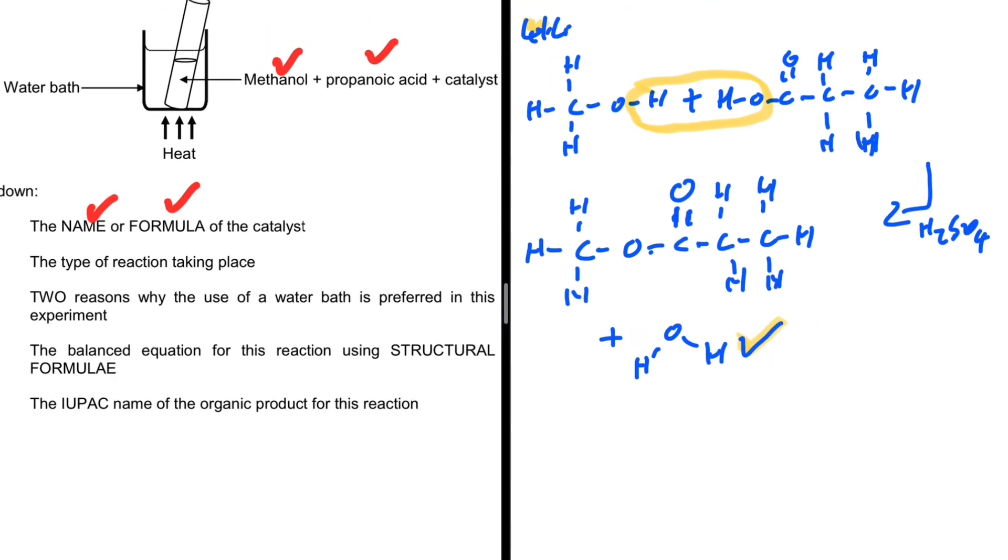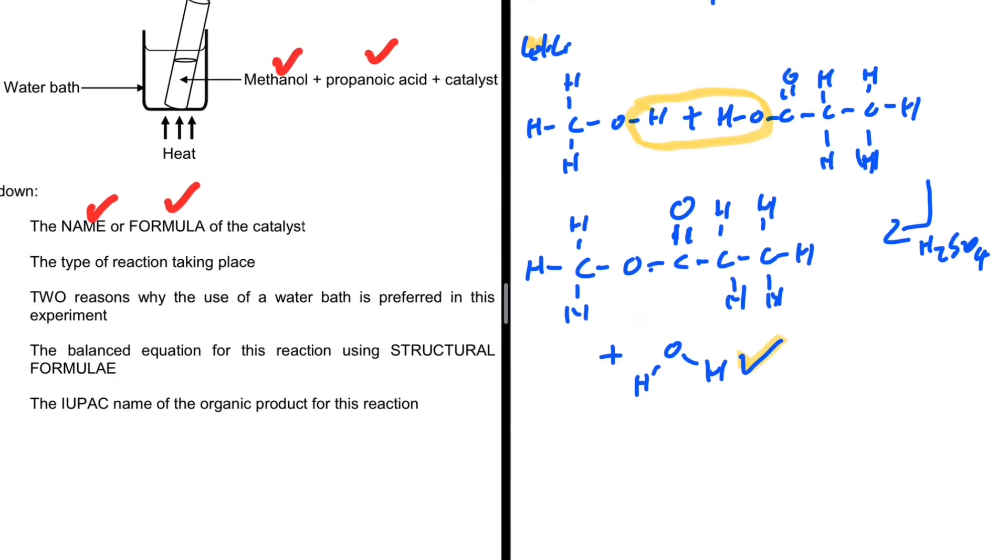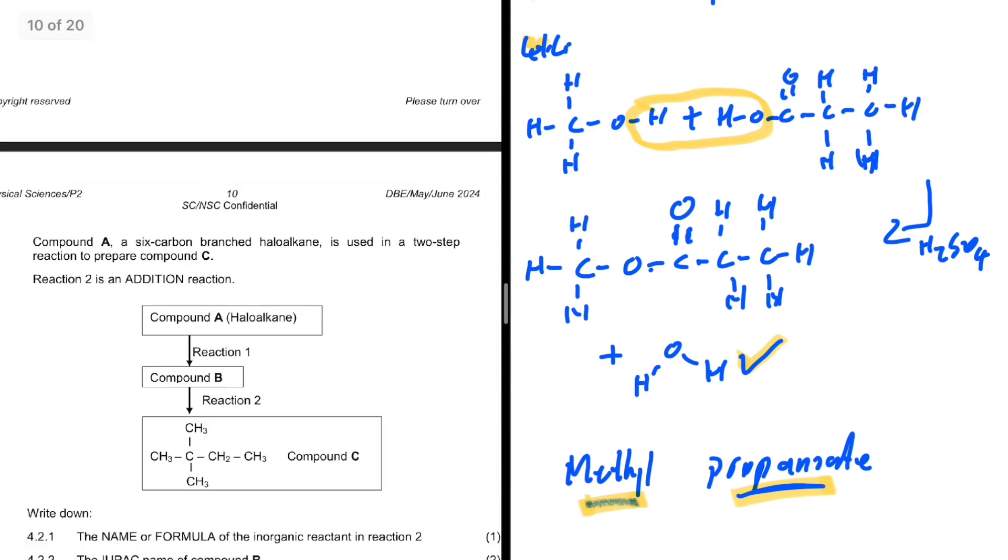That is 4.1.4. I hope you didn't make those mistakes that I was making. The IUPAC name of the organic product for this reaction—the organic product is the ester, not the H2O. What is the name of this ester? We're gonna have methyl propanoate. This part of the name comes from the alcohol, and this part comes from the acid.